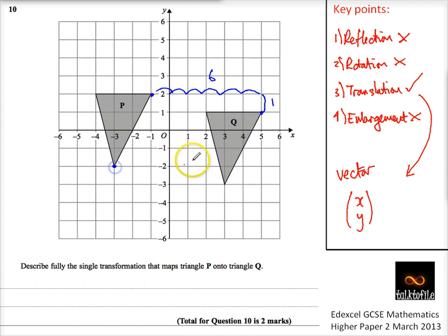Let's check this corner. And it's because nothing else has changed, it's not rotated or reflected or enlarged or anything, it should be exactly the same. 1, 2, 3, 4, 5, 6 along, and 1 down.